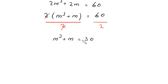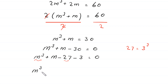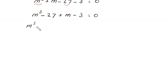Moving 30 to the left-hand side: m³ + m − 30 = 0. We write 30 as 27 + 3. Since 27 = 3³, we rearrange: m³ − 27 + m − 3 = 0, which is m³ − 3³ + m − 3 = 0.